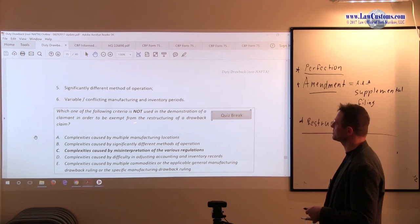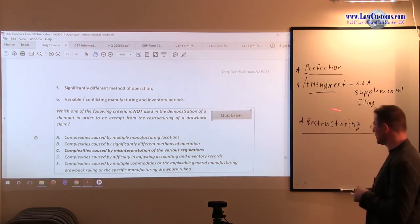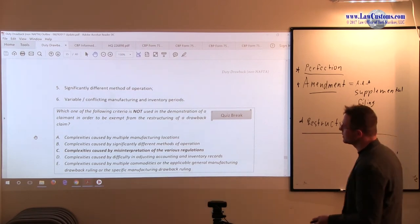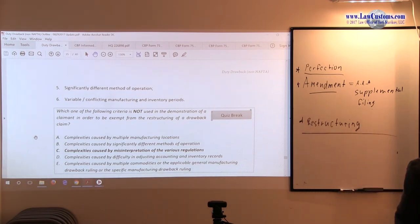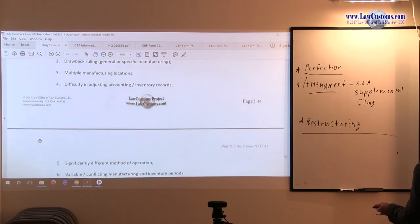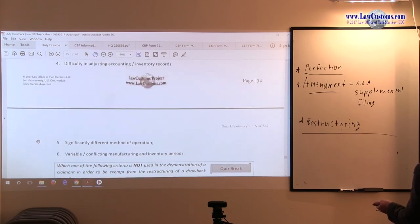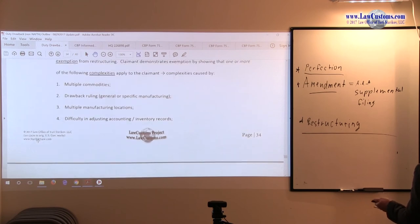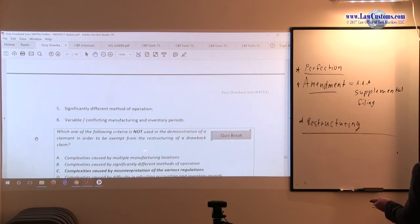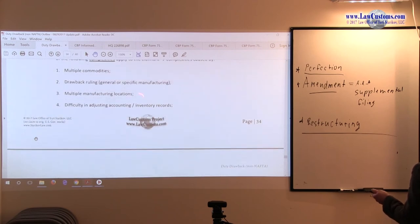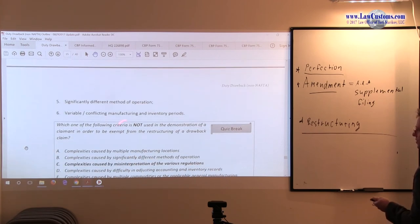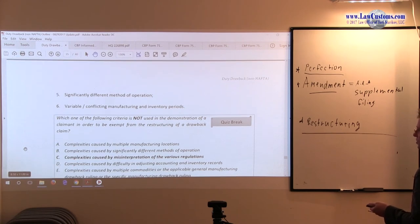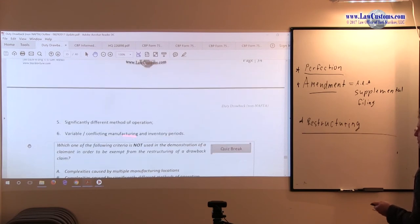So the question goes like this: which one of the following criteria is not used in demonstration of a claimant's order to exempt from restructuring of drawback? So customs can come back with restructuring, the claimant must think of some exception criteria. So we look at the exception list and we just mix and match it. The first answer deals with complexities caused by multiple manufacturing locations. So locations are here, so this fits one of the correct criteria. So B, we are looking for the one that's not. B is the reason, so we move on.